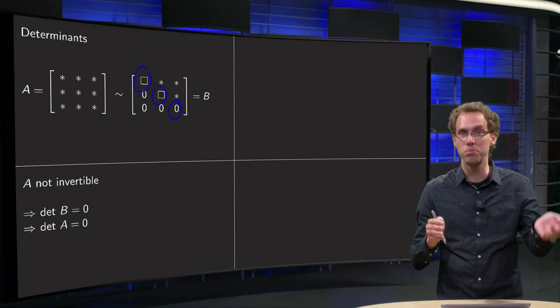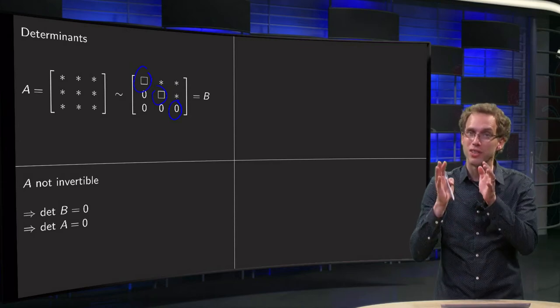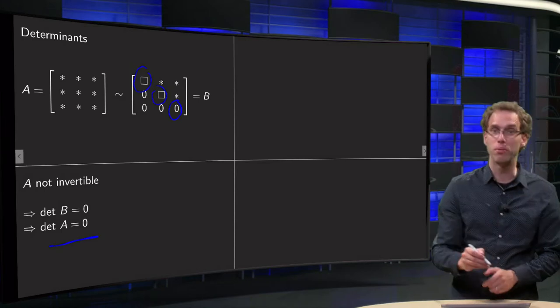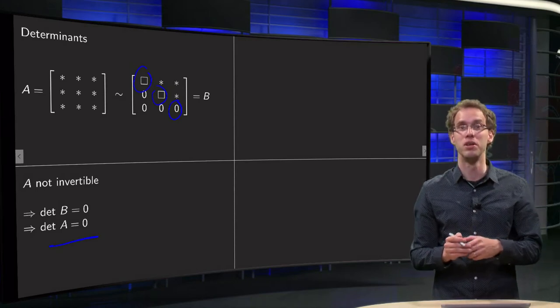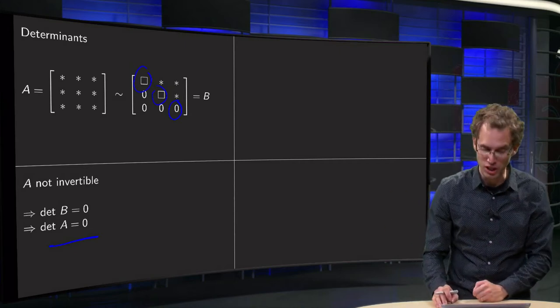You cannot go from 0 to something non-zero because you are only multiplying by numbers. So if the determinant of B equals 0, that means that the determinant of A was also 0. So if A is not invertible, that means the determinant of A equals 0.